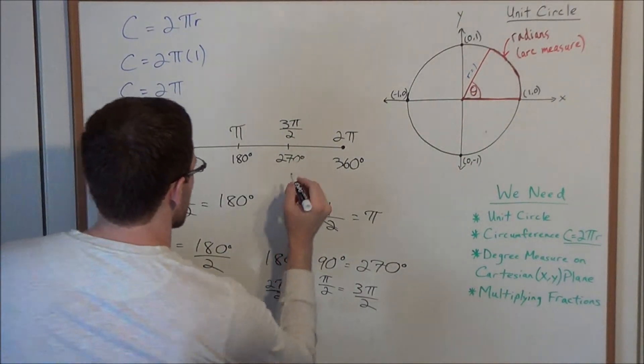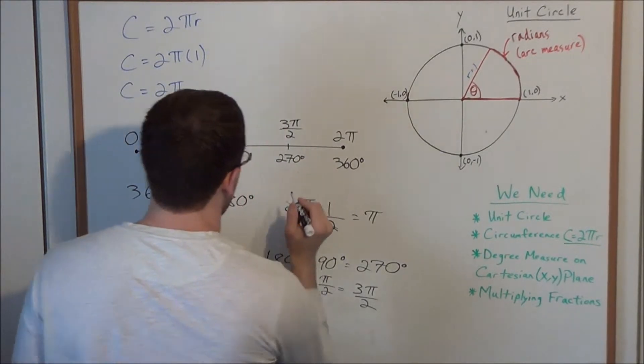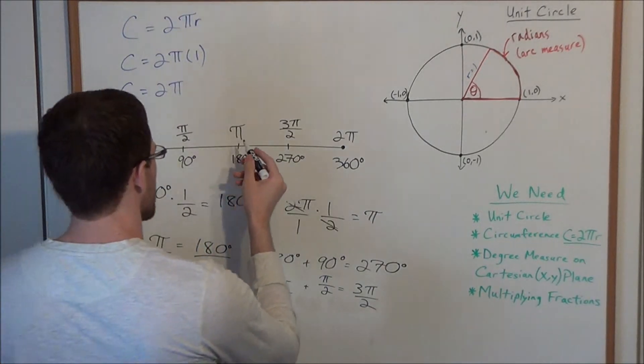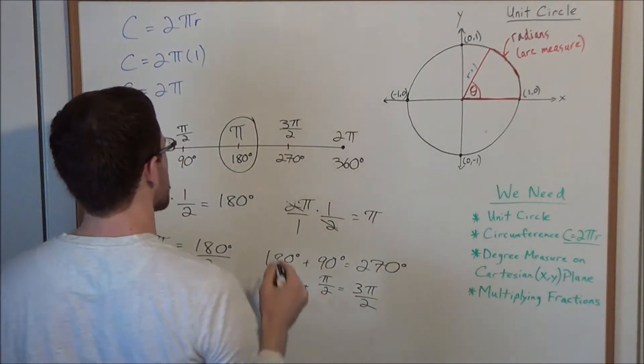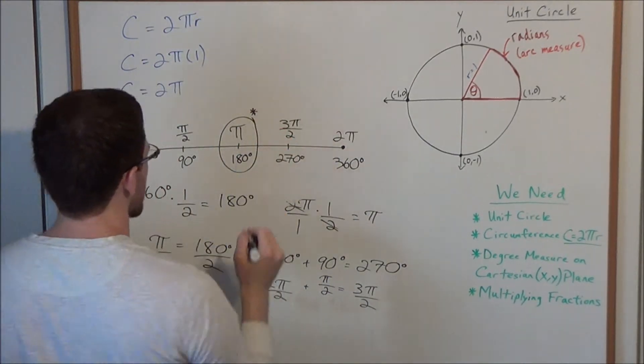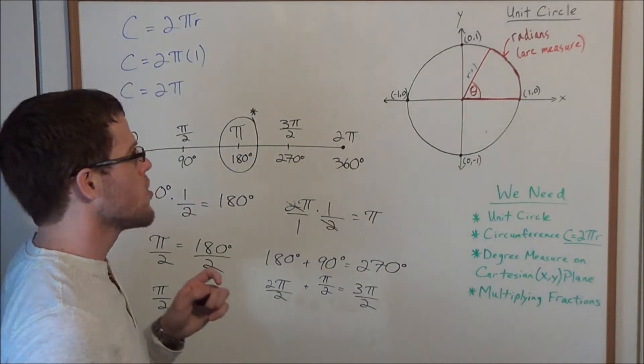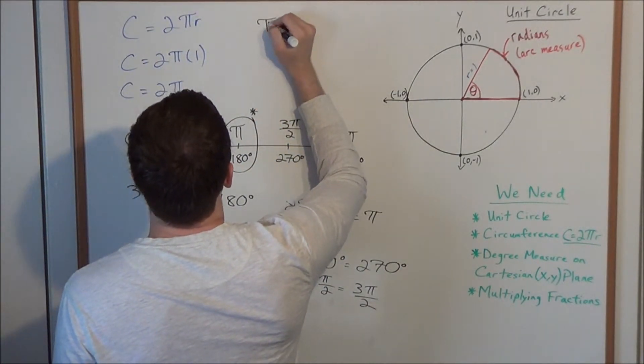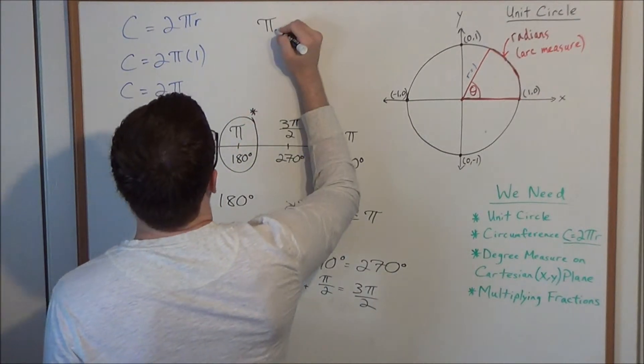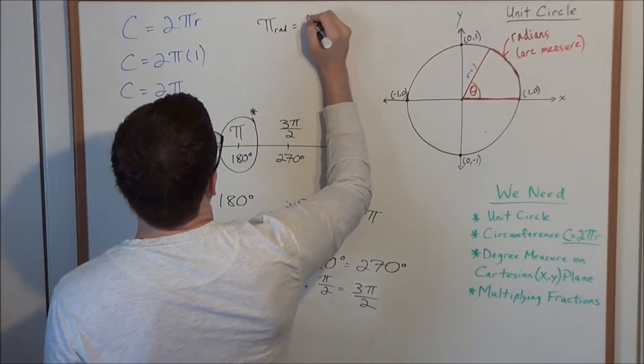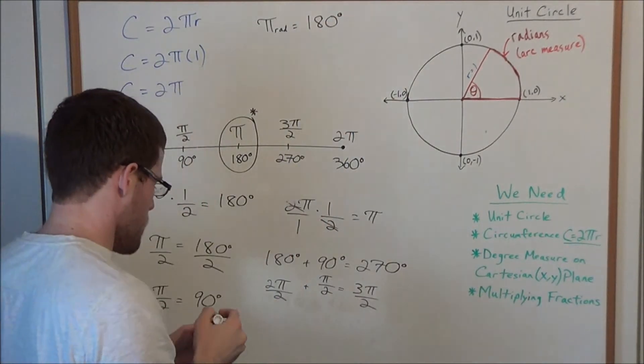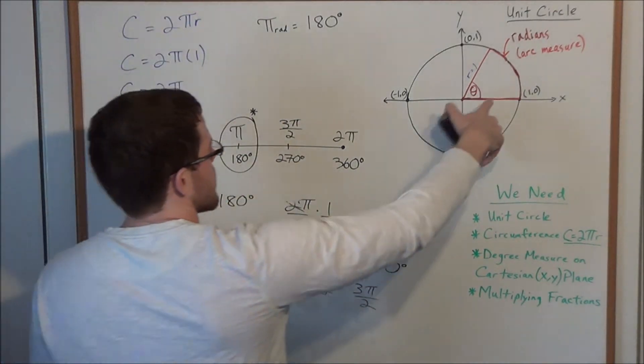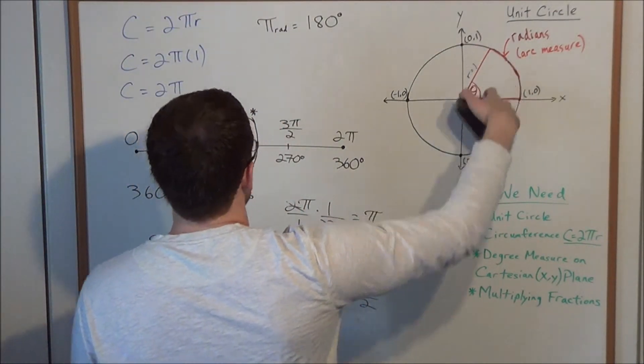And these are some of the critical values for converting from radians to degree measure. But in particular, this one here is probably the most useful. When we use our conversion factors to convert from radians to degrees or degrees to radians, we usually, most teachers will show it, we consider the fact that π radians is equal to 180 degrees. But for now, we just want to focus on this concept of radian measure as part of the circumference of the unit circle.